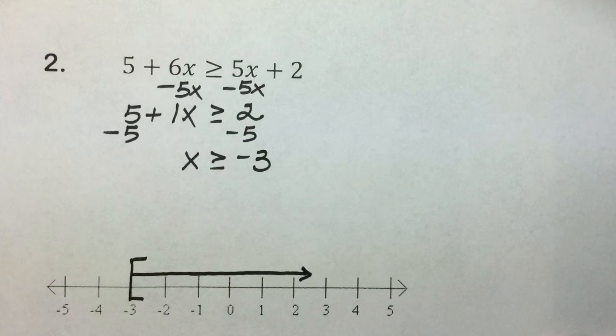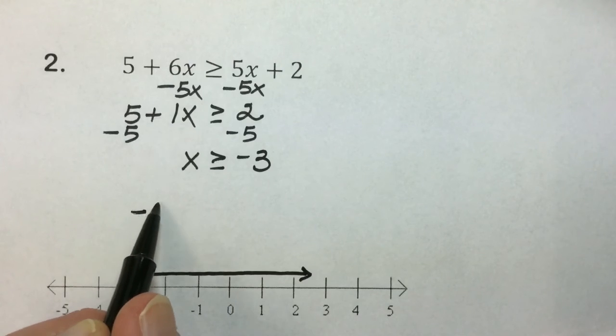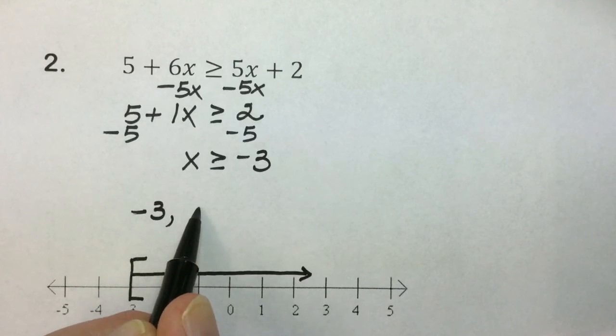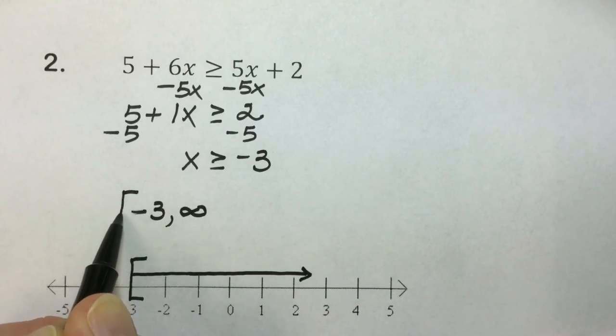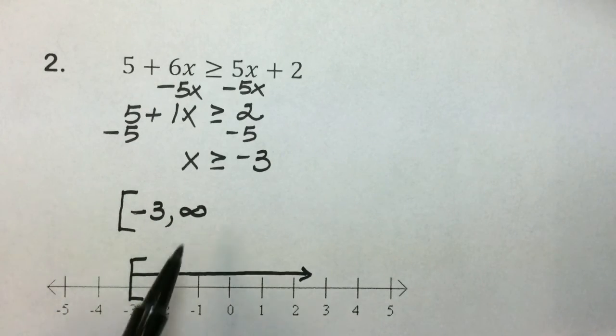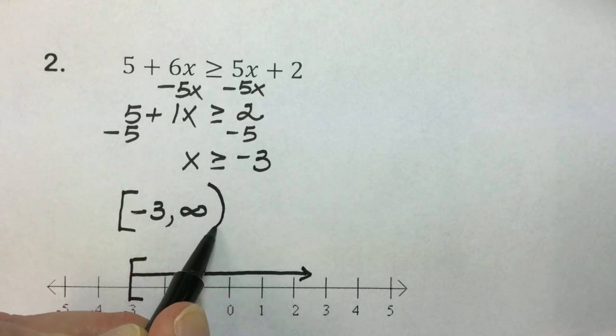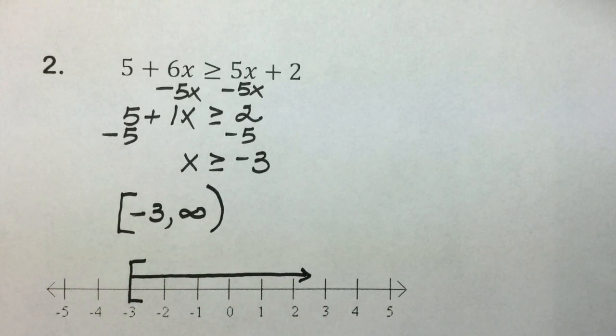In the interval notation equivalent, again, start with the smallest value first, largest value. We are including negative 3, so we use a bracket. And infinity never ends, so we use a parenthesis.